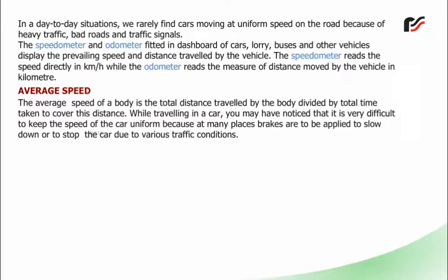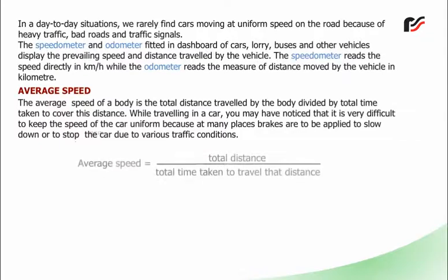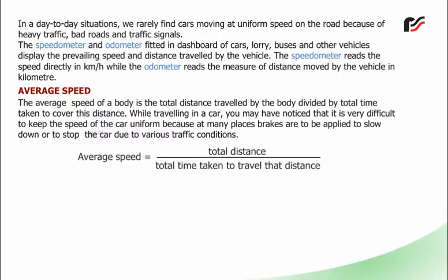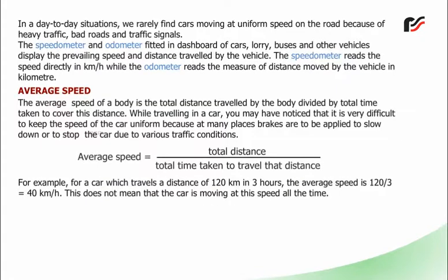Average speed: The average speed of a body is the total distance travelled divided by the total time taken to cover that distance. While travelling in a car, it is very difficult to keep the speed uniform because brakes are often applied to slow down or stop due to traffic conditions. Average speed = total distance ÷ total time. For example, for a car that travels 120 km in 3 hours, the average speed is 120 ÷ 3 = 40 km/h. This does not mean the car is moving at this speed all the time.